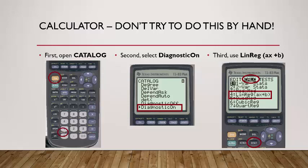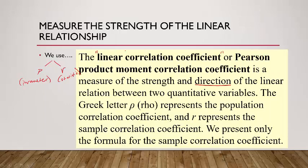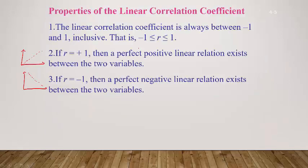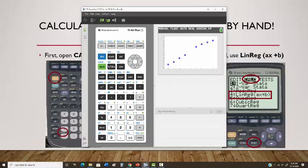Now I want to show you how to find R using your graphing calculator, because you definitely don't want to find this by hand given how complex that formula looks. I'm going to show you how to do this on a TI-84 emulator, but the same options apply to the TI-83.